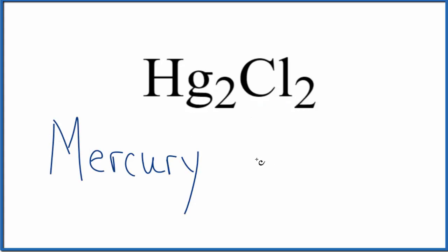Next, we'll write the name for Cl, chlorine. And then since we have this ionic compound, we're going to cross out the I-N-E and have I-D-E. And so far, we have the name mercury chloride for Hg2Cl2.